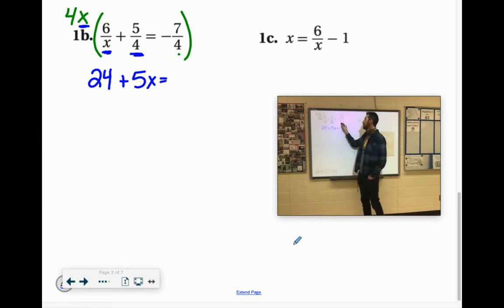And this negative 7 has the 4 on the bottom. So we're just going to multiply by what it's missing. It's missing the x. So negative 7 times x would be negative 7x. Now we're just solving your normal equation.